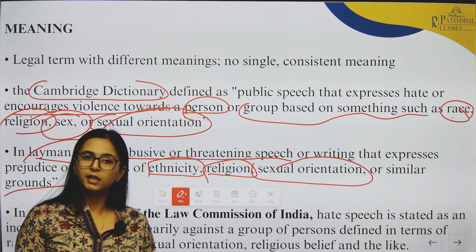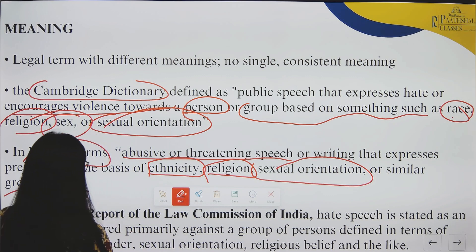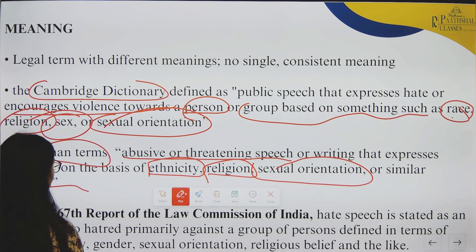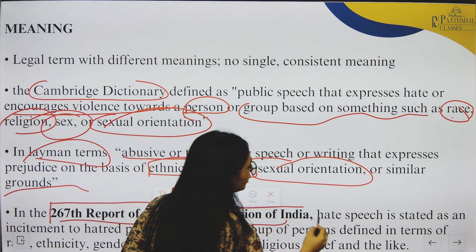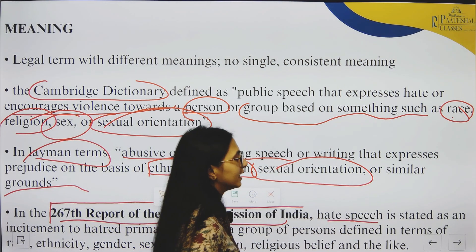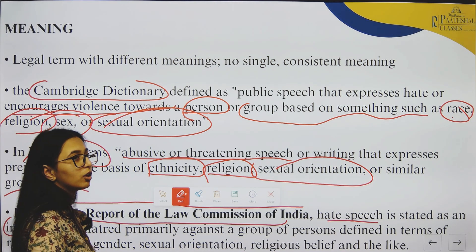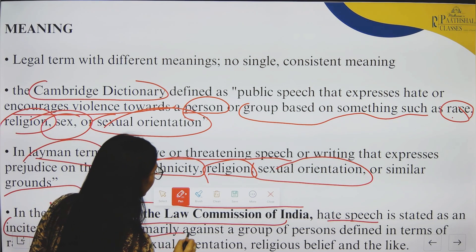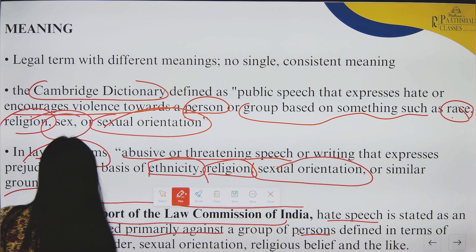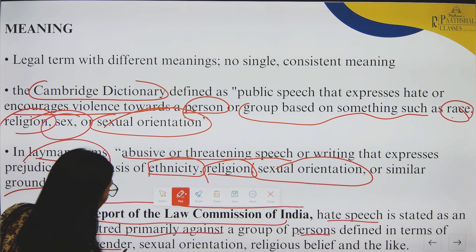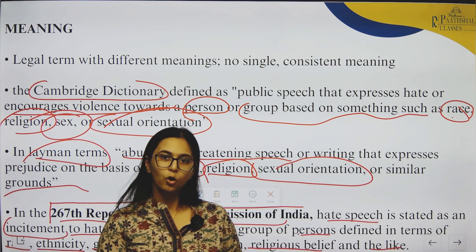The Law Commission has also stated a definition for hate speech, which we must remember. It comes from the 267th Report of the Law Commission. It has stated hate speech as an incitement — meaning active opposition and active hate — to hatred primarily against a group of persons defined in terms of race, ethnicity, gender, sexual orientation, religious beliefs and the like.